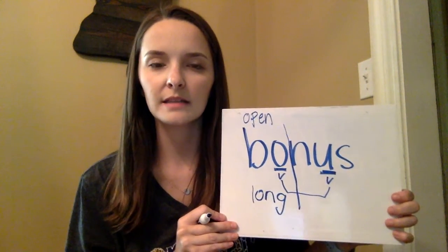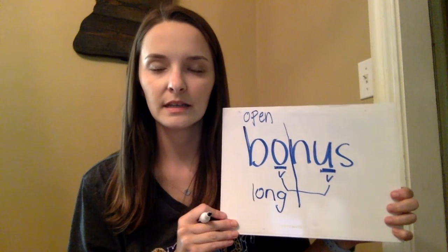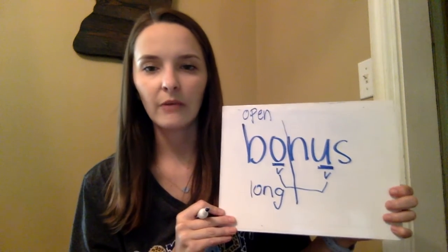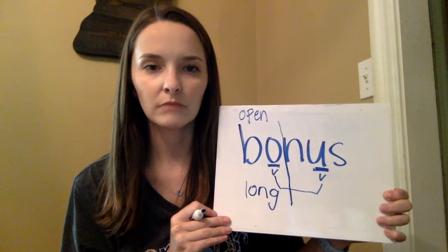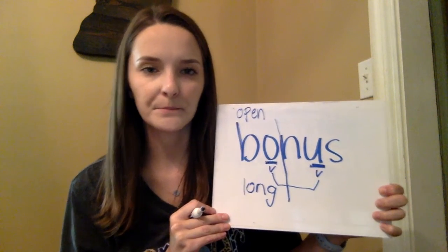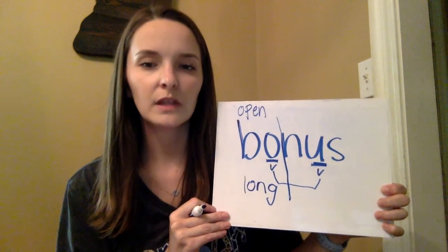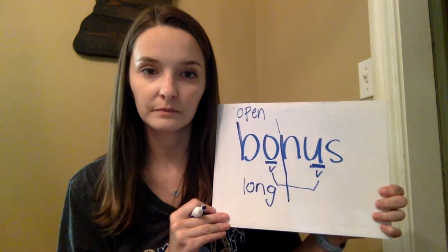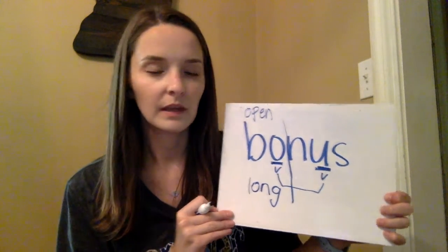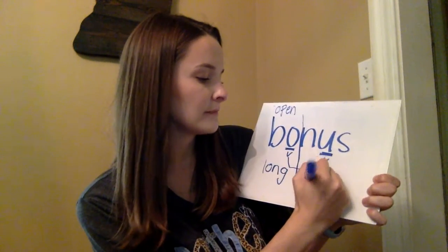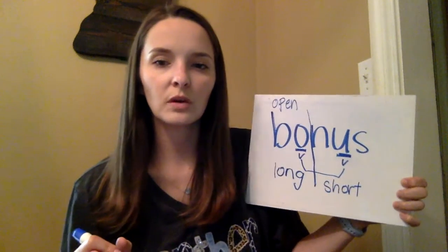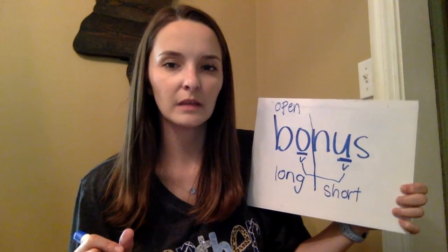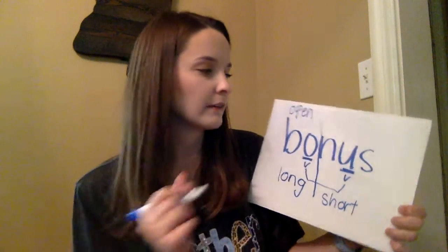Then we move on to our second syllable: 'nuss.' Is that vowel open, closed, long, or short? Let's start by identifying if it's long or short. It's a short vowel sound. If it's a short vowel sound, what syllable type will we have? Closed. So the second syllable of 'bonus' is a closed syllable type.